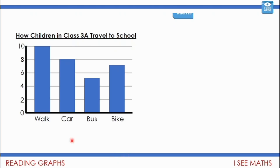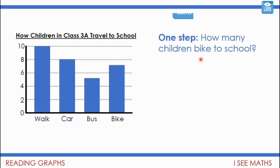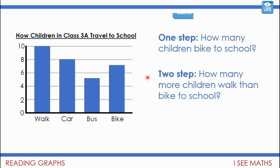Some children walk, some go by car, some by bus, some by bike. A one-step question would be: how many children bike to school? I only need to find out one thing. Look at this bar — read across the scale, it's between 6 and 8, so it must be 7. A two-step question requires more than one piece of information: how many more children walk than bike? I need to find how many walk — 10 — and how many bike — 7 — so that's 3 more.